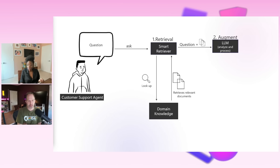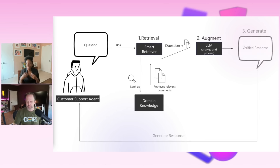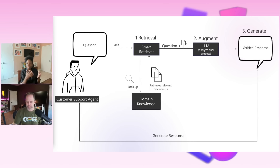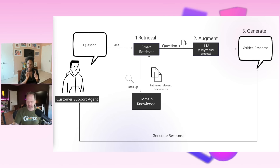The next step is Generation. We have our question, we have our response — we have to generate a response in a format that makes sense to the customer support agent. This is where natural language comes back into play, and then it is sent right back to the user.